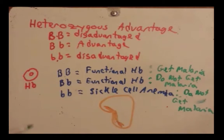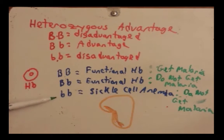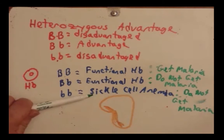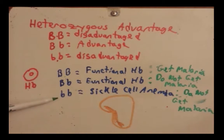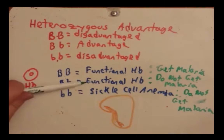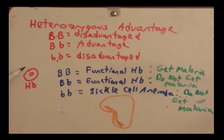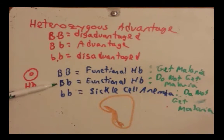So let's review why the heterozygote has an advantage. Homozygous dominant individuals have functional hemoglobin but get malaria in areas where malaria is predominant. Homozygous recessive individuals have sickle cell anemia but don't get malaria. Both extremes have a problem that interferes with their relative fitness — their ability to produce many offspring. The heterozygotes have functional hemoglobin and also don't get malaria, so they are more fit and produce more progeny.